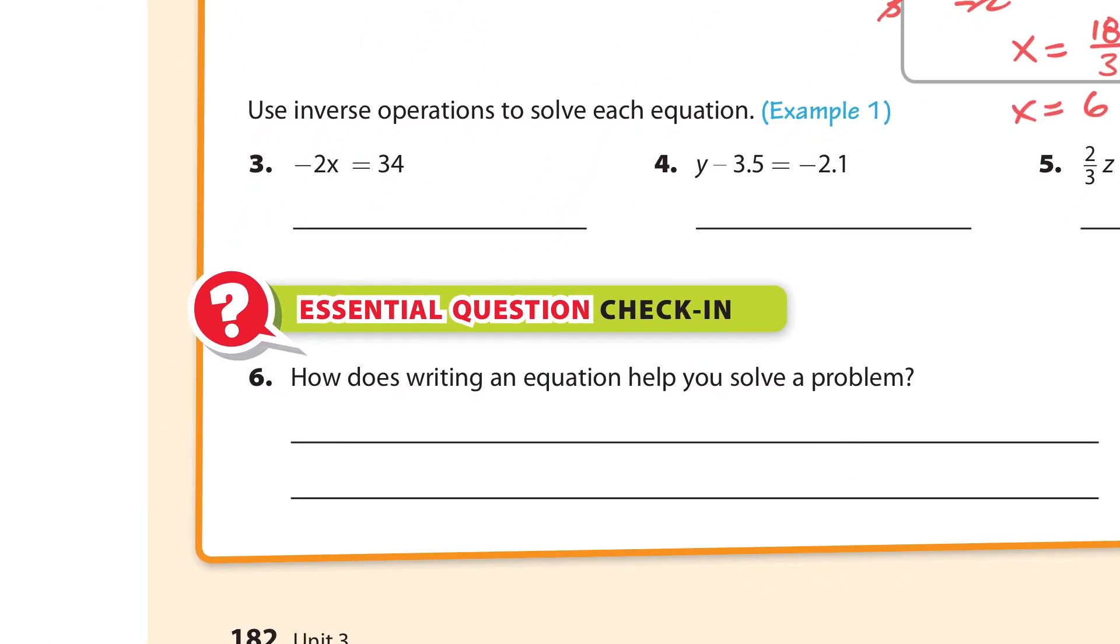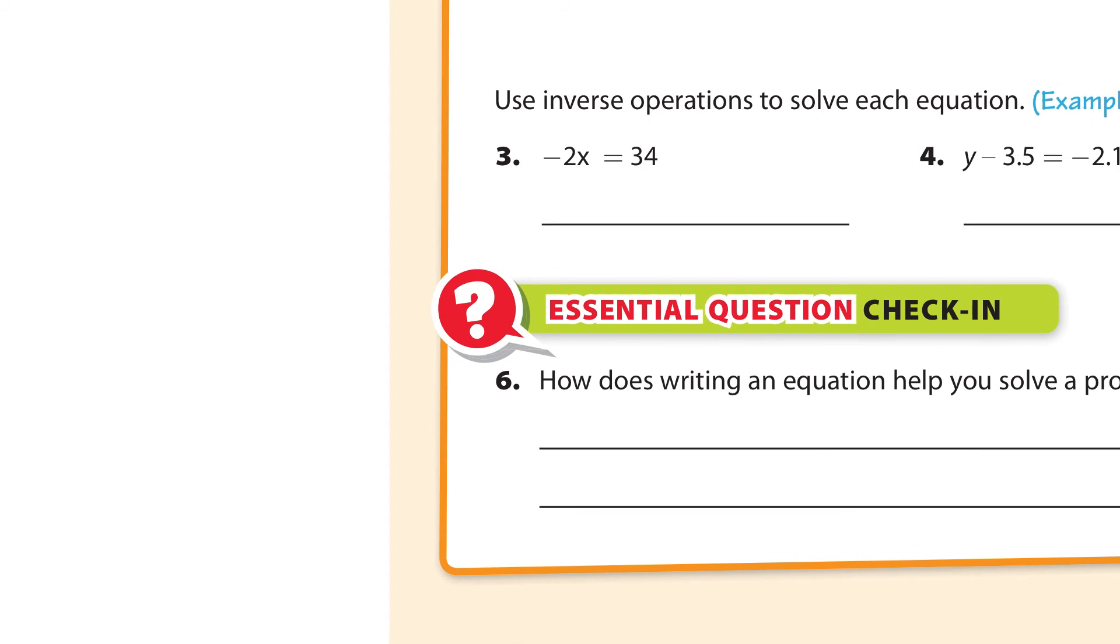Next, we have this. Use inverse operations. I'm going to write this right here. Negative 2x is equal to 34. Okay. So the operation we see is multiplication, so we divide. Divide by the exact same number, negative 2. These cancel. And x is equal to 34 divided by negative 2, which is negative 17.